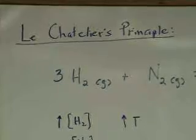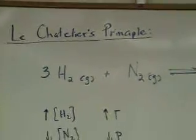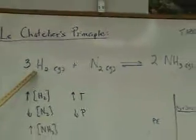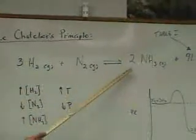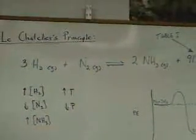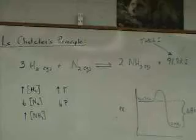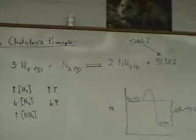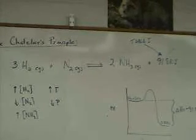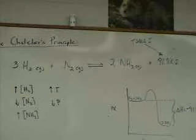Le Chatelier basically said if you have a reaction at equilibrium, such as this one, which is hydrogen plus nitrogen making ammonia, if we could get that thing going on in a sealed container and get it to achieve an equilibrium where the forward and reverse rates were equal, we would be able to talk about Le Chatelier and his idea.